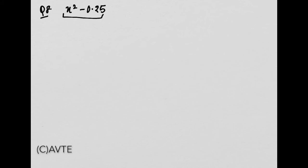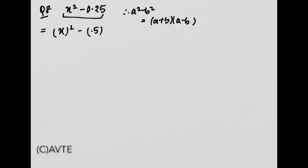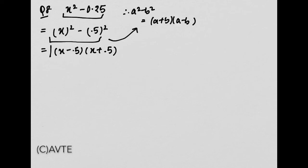Aaiye dekhte hain question number 8: x square minus 0.25. Is question ko hum a square minus b square ke form mein karenge: x whole square minus 0.5 whole square. Opening this: x minus 0.5 into x plus 0.5. These are the factors of the given polynomial.